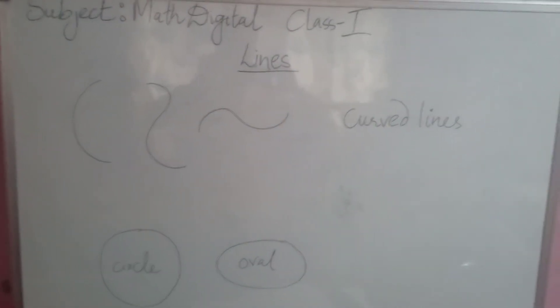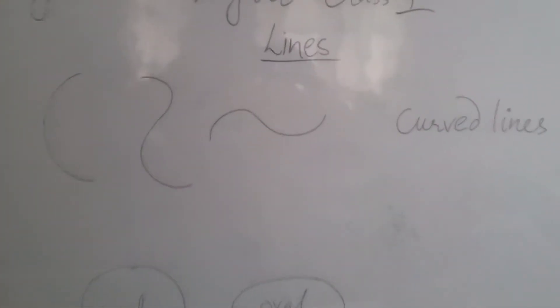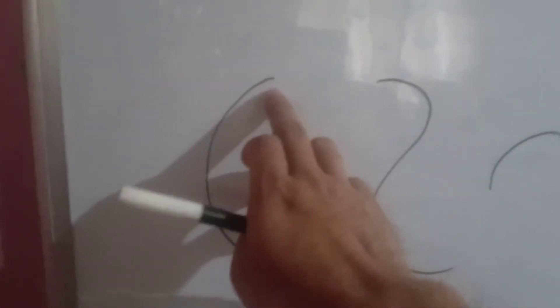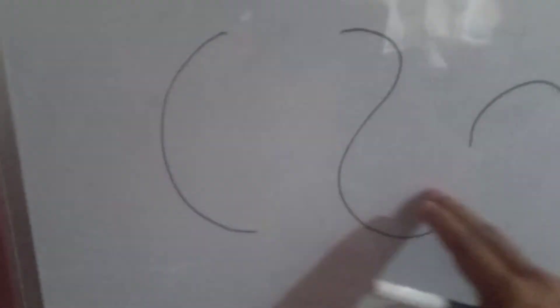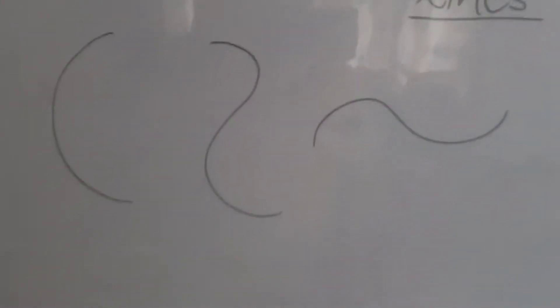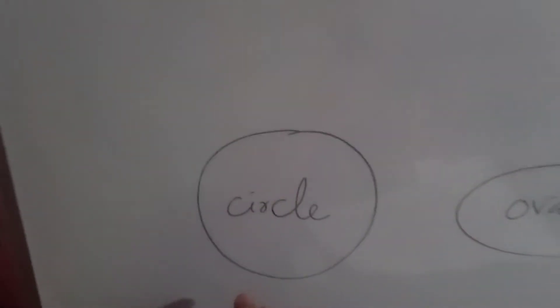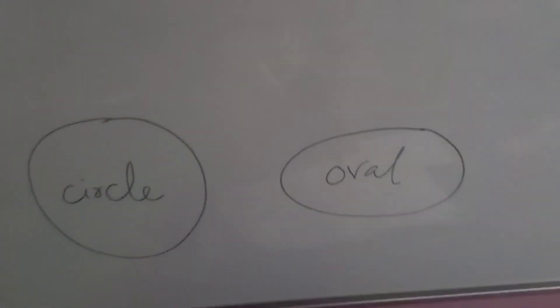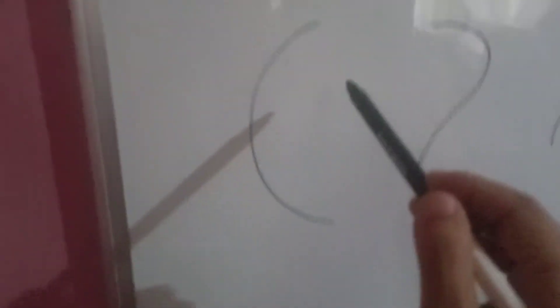The next type of line we have is curved lines. As you can see, these are all in a curved shape, so these are called curved lines. Curved lines are used to draw shapes like circles and ovals.